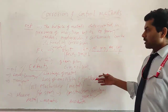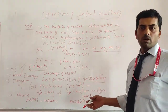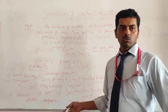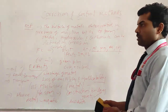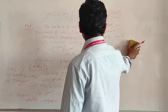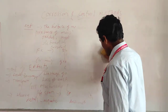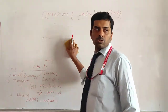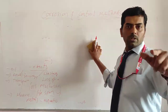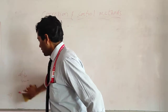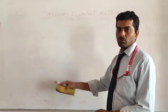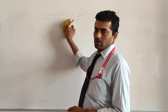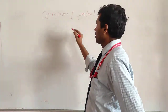In this way we have seen some effects of corrosion. Now we will see the controlling measures — how to control corrosion using some scientific methods. We have the cathodic protection method to control corrosion.